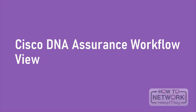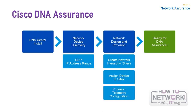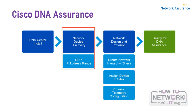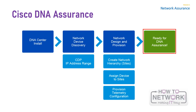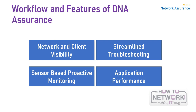Now let's talk about the Cisco DNA Assurance workflow view. Before you begin using the Assurance application, you must set up Cisco DNA Center to use Assurance. The steps to configure Cisco DNA Assurance are: first, install the Cisco DNA Center (refer to Cisco.com for installation guidelines); next, discover devices using either CDP, LLDP, or an IP address range; then design your network hierarchy and configure the location of devices such as area, site, building, and floor. After completing all of this, you can then use Assurance in your network. The four features of Cisco DNA Assurance are: network and client visibility, sensor-based proactive monitoring, streamlined troubleshooting, and application performance.